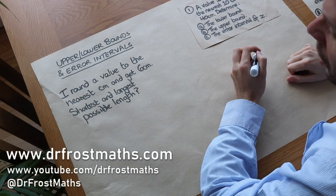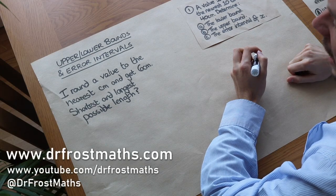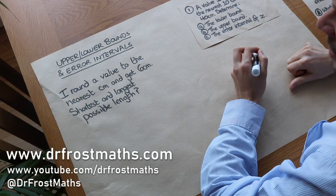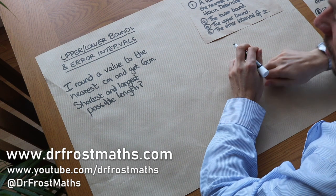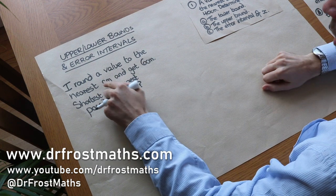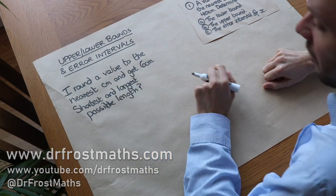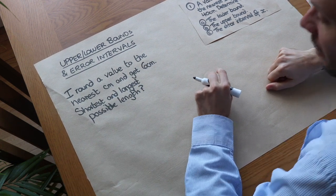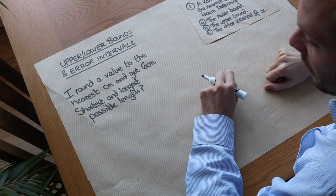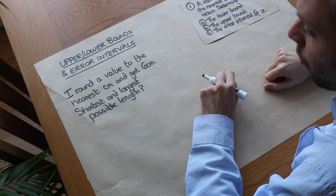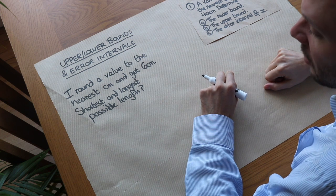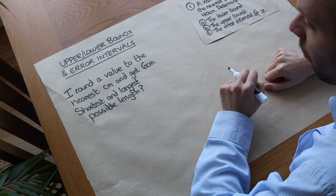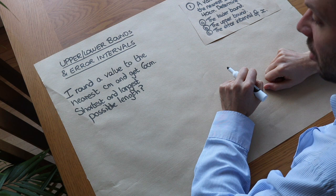Hello and welcome to this video on upper lower bounds and error intervals. Let's say that I measured a value and rounded it to the nearest centimetre and obtained a value of 6 centimetres. What would be the shortest and longest possible lengths of that object I measured?